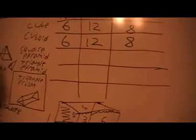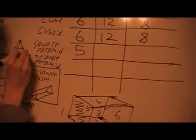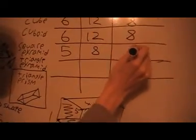A square-based pyramid: it has four triangles and a square on the bottom, so it's going to have five faces — because each of those triangles is a face, and the square on the bottom is also a face. The number of edges: it's going to have four edges on the bottom, and another four edges pointing up, so that's eight edges. And it's going to have four corners on the bottom and the big point at the top — that's five vertices.